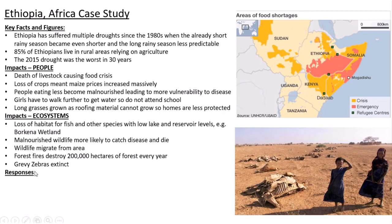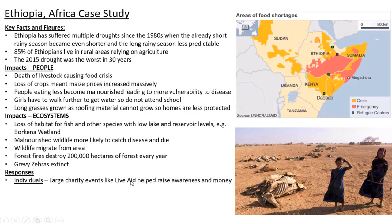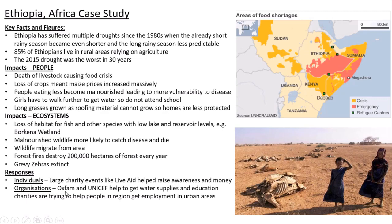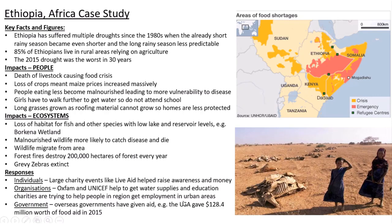Responses to Ethiopia's drought have been very much global — Ethiopia receives more emergency aid than almost any country on the planet. On an individual basis, big charity events like Live Aid, the song 'Feed the World' / 'Do They Know It's Christmas?' and concerts in the 1980s raised awareness and money for relief efforts. Organisations like Oxfam and UNICEF provide emergency aid including water supplies and education, and try to help people get employment so they don't rely quite so much on agriculture. On a government level, the Ethiopian government has very little money, so overseas governments provide aid — the USA, for example, gave $128.4 million worth of food in emergency aid during the serious 2015 drought.